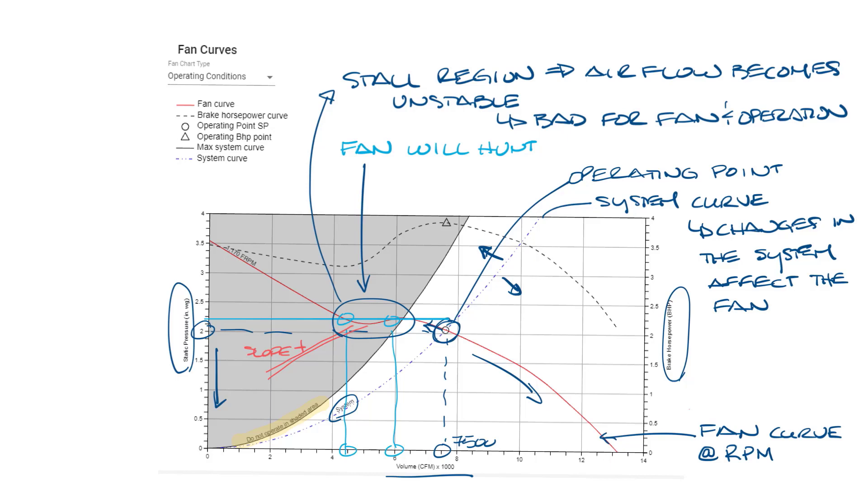If you add pressure drop to the system, the system curve could shift over here, and now you see that your operating point is at a lower CFM. And now your fan is not producing as much air as you need, or if you're close enough to this gray area, you could end up in the do not operate area of the fan curve.